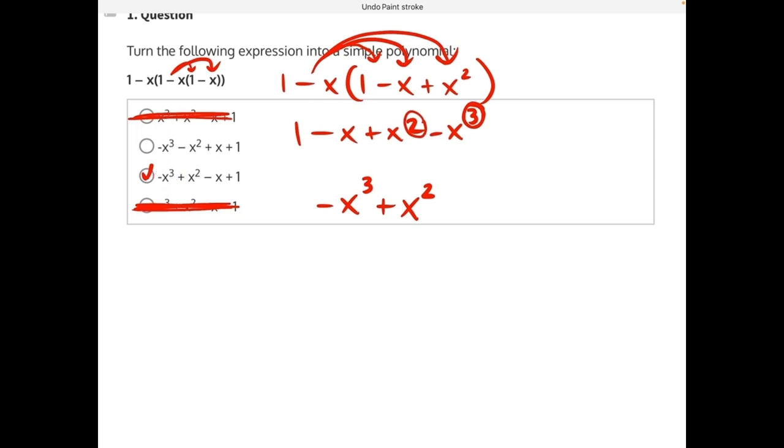But for the sake of the video I will continue rearranging this expression. Our next highest power is x to this invisible one. So we would have negative, don't forget the sign, x to the 1. And then we would have our constants which is just a positive 1. So plus 1. Again matching answer choice C.